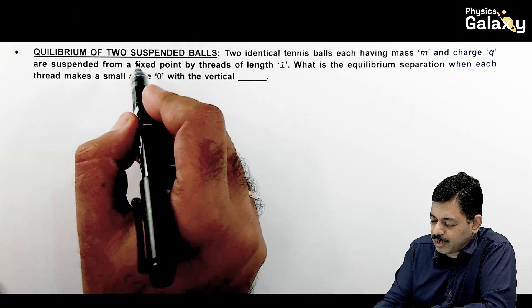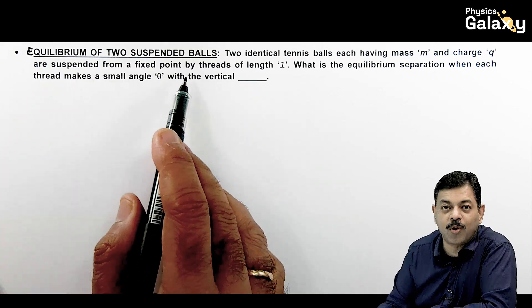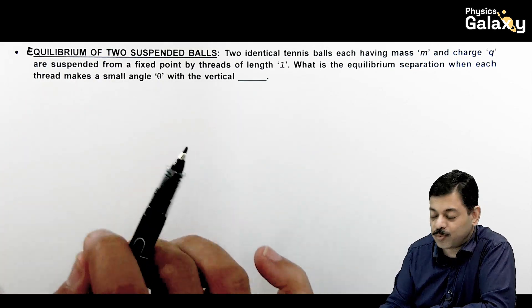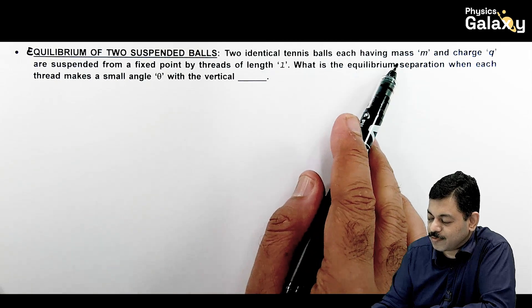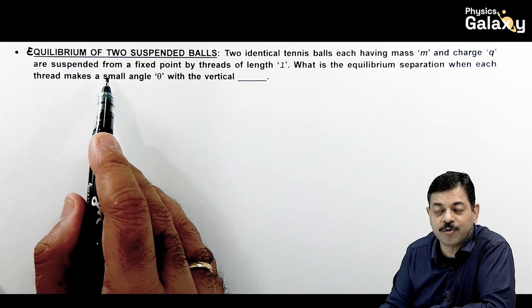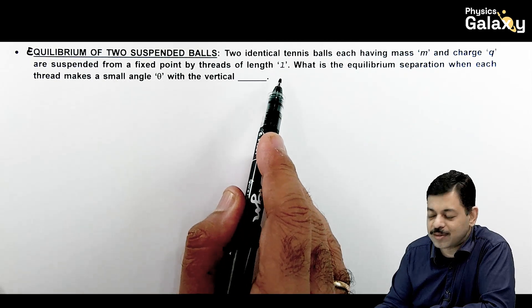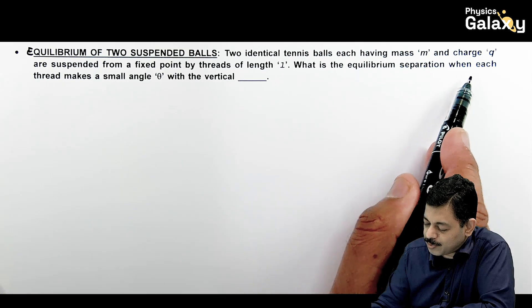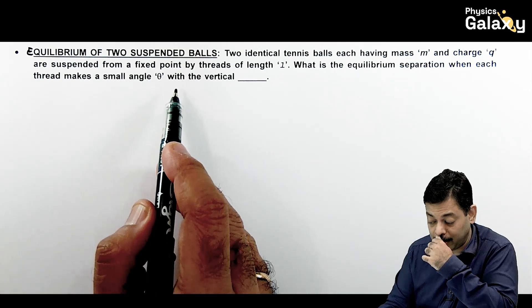Students, we will be talking about the equilibrium of two suspended balls. This case has been asked many times. Here it says two identical tennis balls each having mass m and charge q are suspended from a fixed point by threads of length L. What is the equilibrium separation when the threads make an angle theta with the vertical?